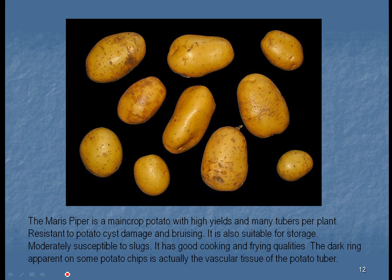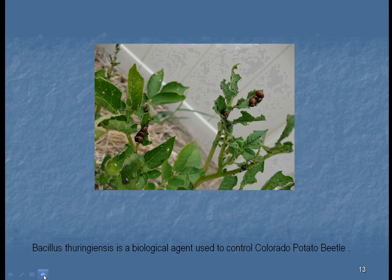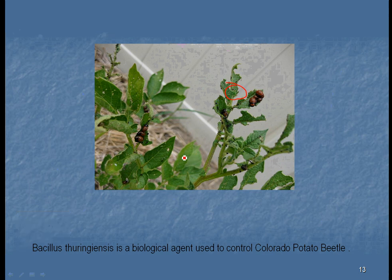If you've ever looked at a potato chip, you can see a ring around it — that's actually the vascular tissue, the xylem and phloem, as we discussed in Unit 2. The potato bug is another challenge; you can see the damage these voracious insects do, going through an entire plant in possibly two days. They used to be picked off by hand, but now we can treat plants with BT, a type of biological product, to control them.